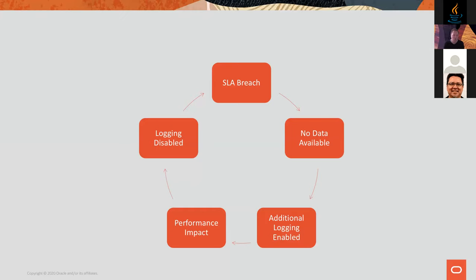You might be tempted to add some logging to get additional data. Maybe you understand which rough area things are going wrong in but don't have the details. So you add some logging, turn it on, and keep running the service for a while. Unfortunately, chances are you're not actually going to capture more of that data — it was a one-off, intermittent problem. What's worse is that logging comes with overhead in performance or code complexity. At some point you disable the logging, and guess what? Some Saturday at 3 a.m., you're back to an SLA being breached again and you don't have the data available.